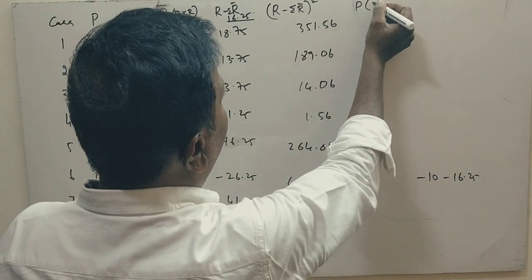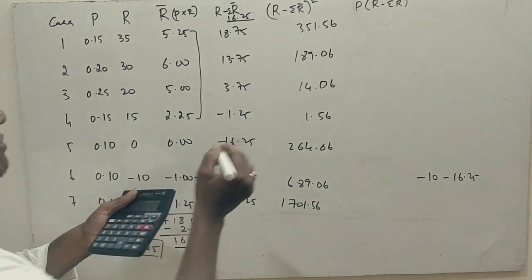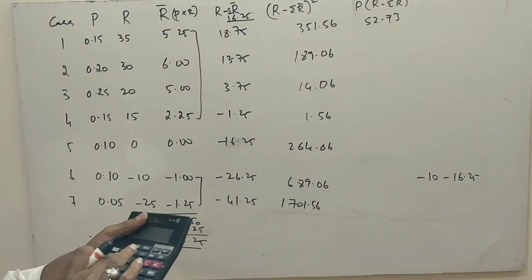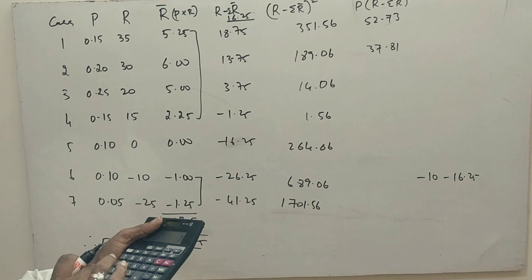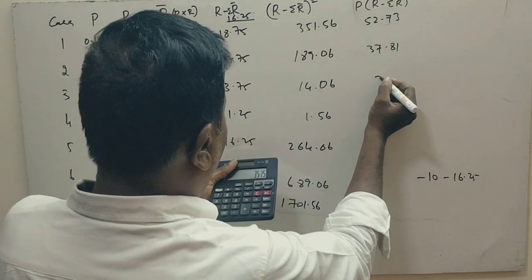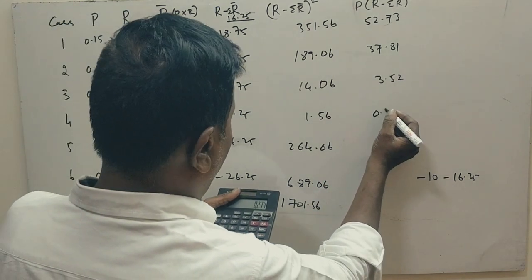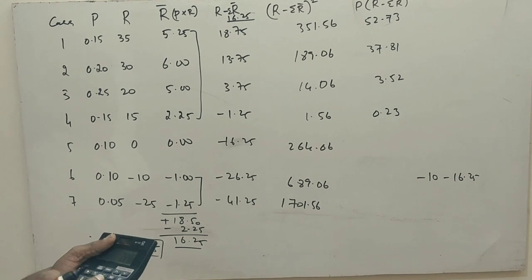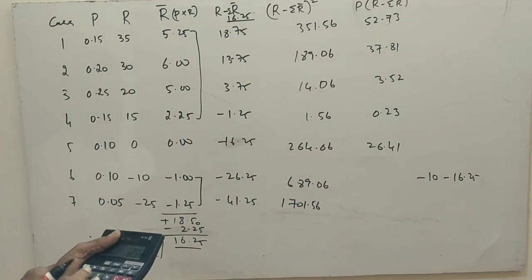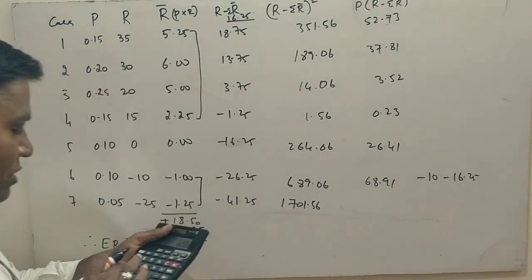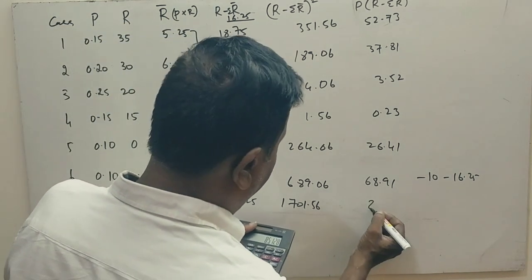Last one is P into R minus summation R dash whole square. Now into probabilities 0.15, 52.73. 689.06 into 0.20 is 137.81. 14.06 into 0.25 is 3.52. 1.56 into 0.15 is 0.23. 264.06 into 0.10 is 26.41. 689.06 into 0.1 is 68.91. 1701.56 into 0.05 is 85.13.